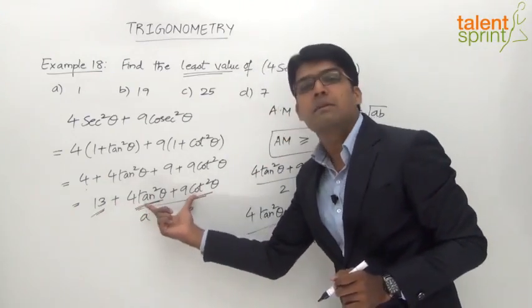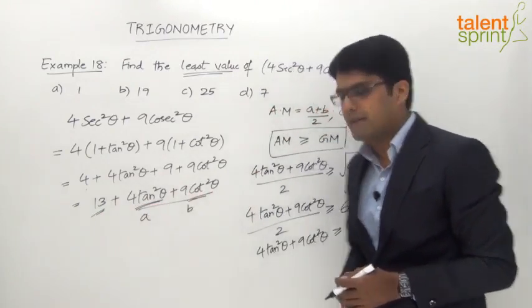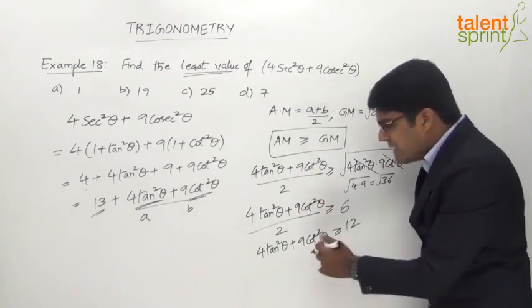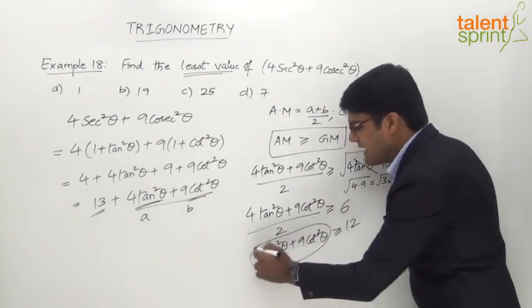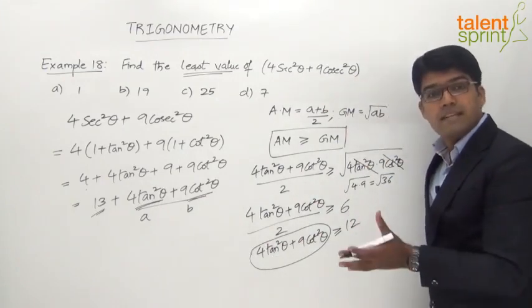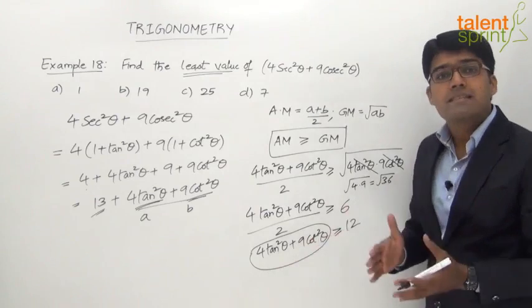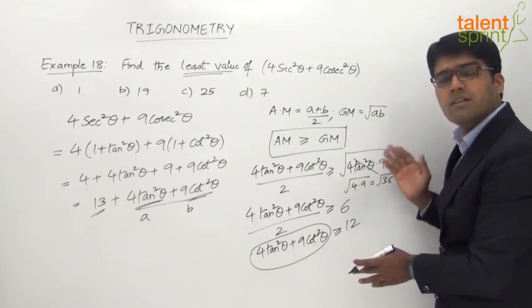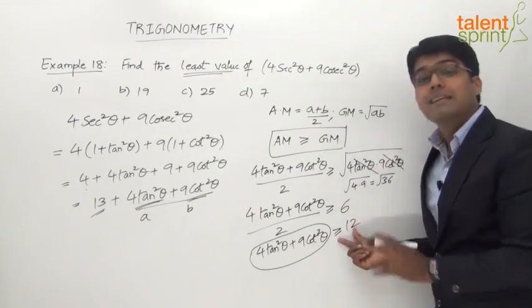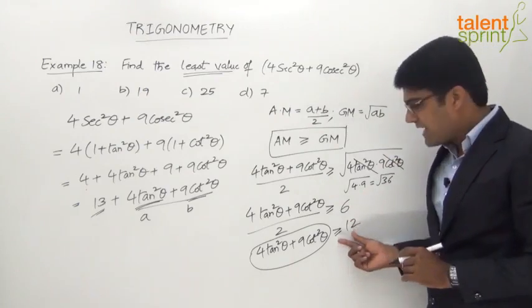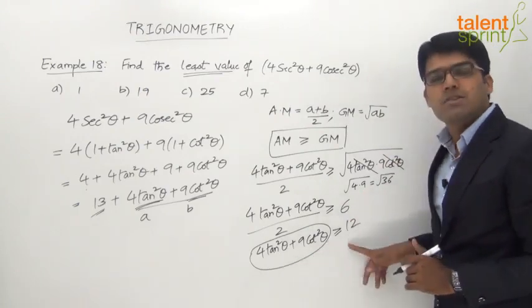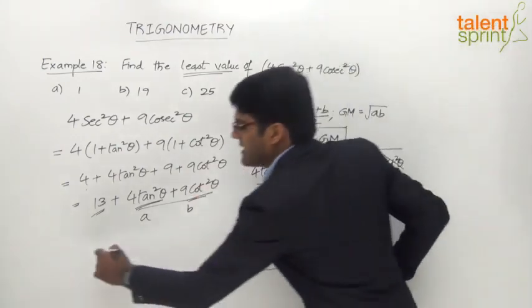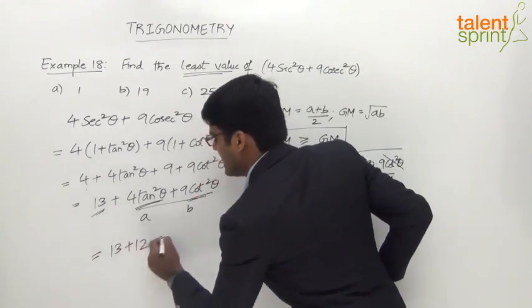Since we want the least value, the minimum value for 4tan²θ + 9cot²θ is 12 — it cannot be less than 12. It can be 12, 13, 14, or go up to infinity, but never below 12. So the minimum of 4tan²θ + 9cot²θ equals 12. Substituting back, the minimum of the full expression is 13 + 12 = 25.